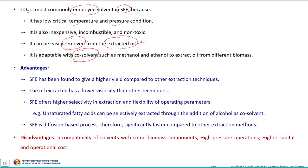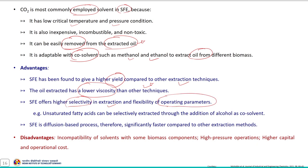CO₂ is the most commonly employed solvent in supercritical fluid extraction because it has a relatively low critical temperature and pressure. It is also inexpensive, incombustible and non-toxic. It can be easily removed from the extracted oil. It is also adaptable with co-solvents such as methanol or ethanol to extract oil from different biomass samples. This technique gives a higher yield compared to other extraction techniques and the extracted oil has lower viscosity. The process also offers higher selectivity and flexibility of operating parameters.